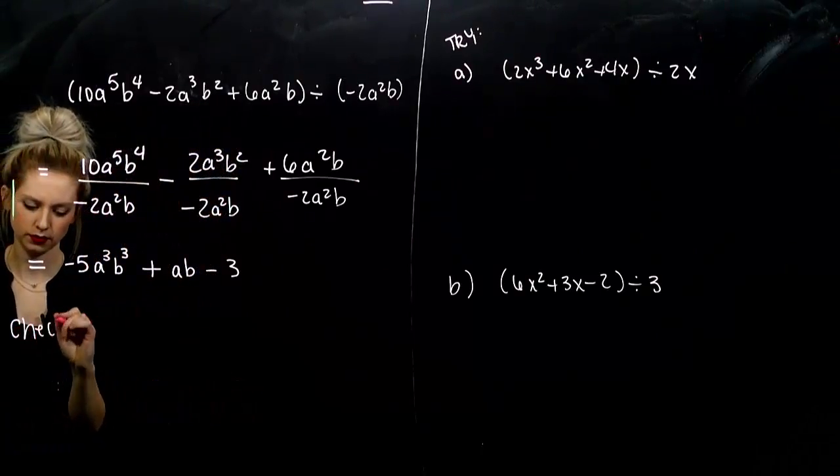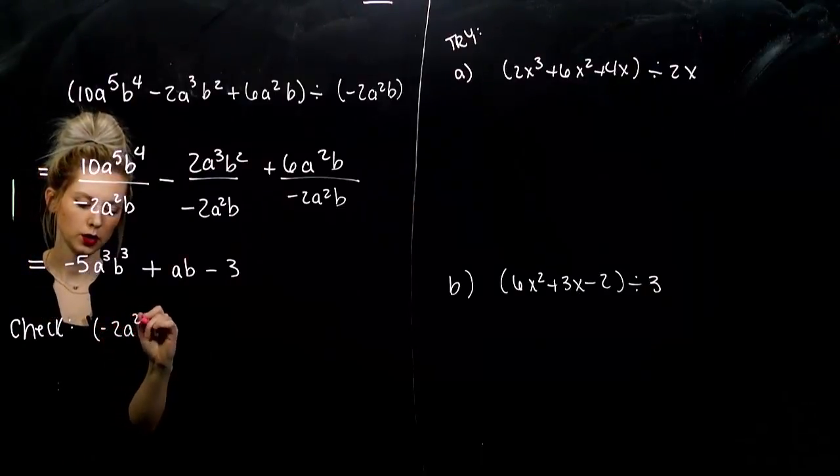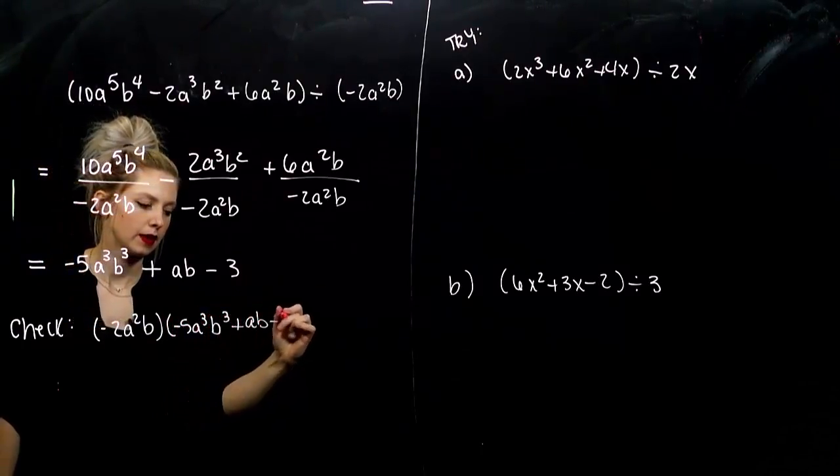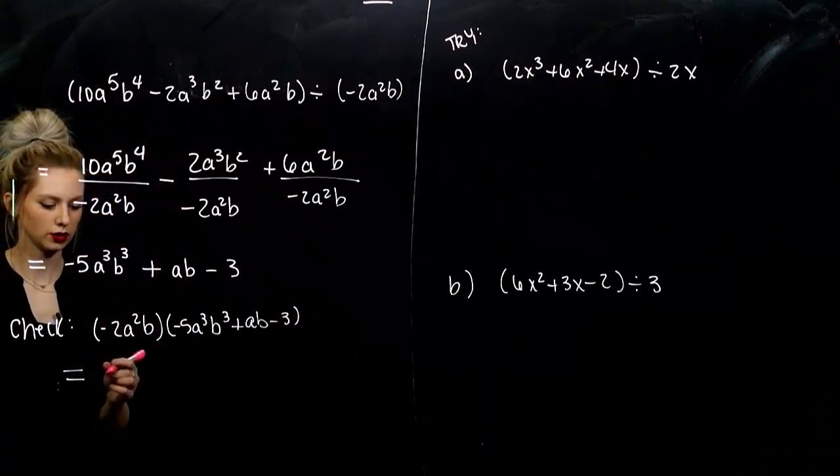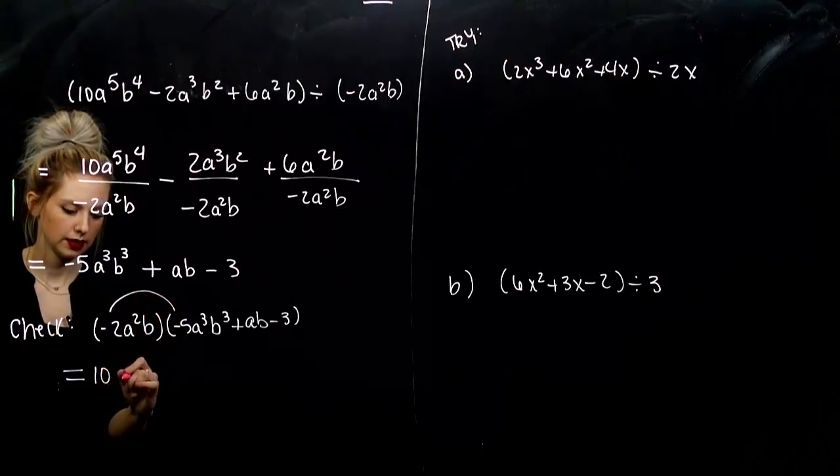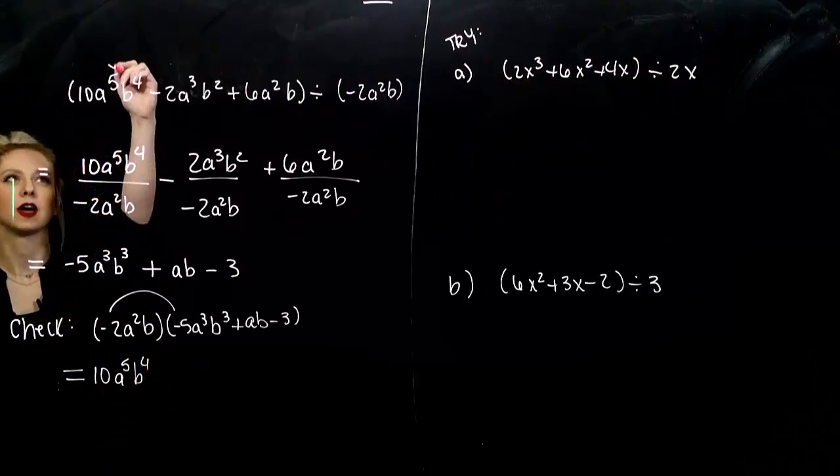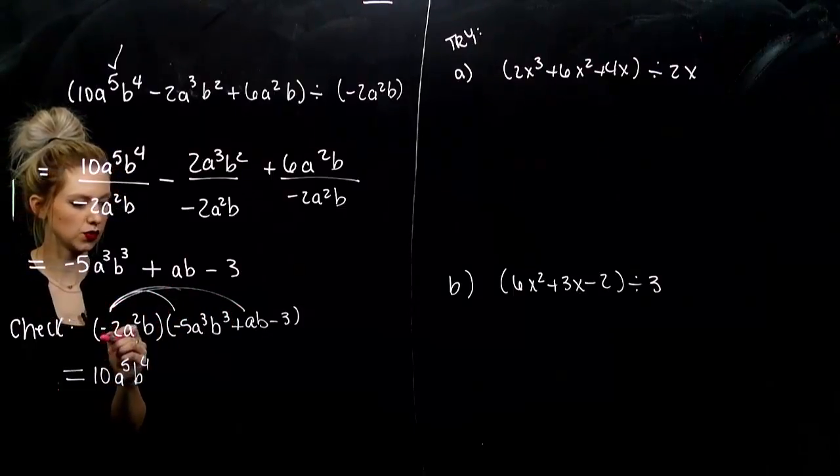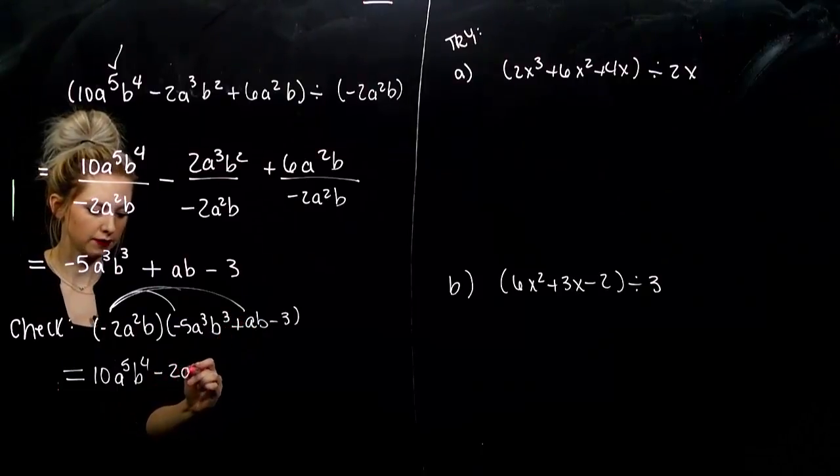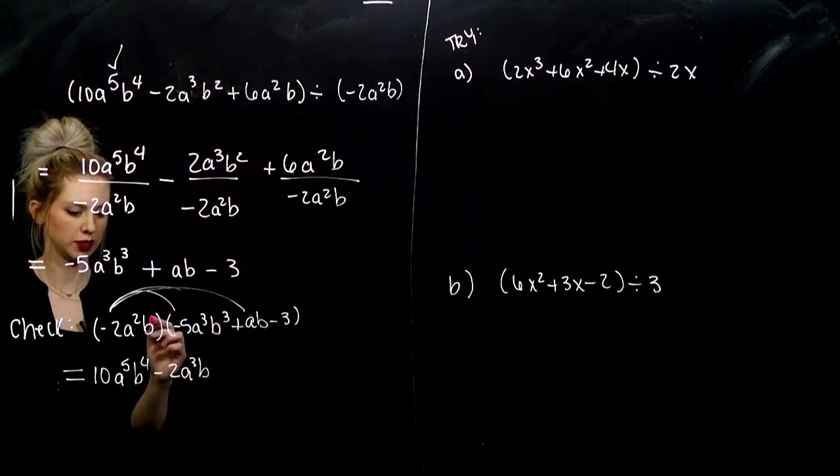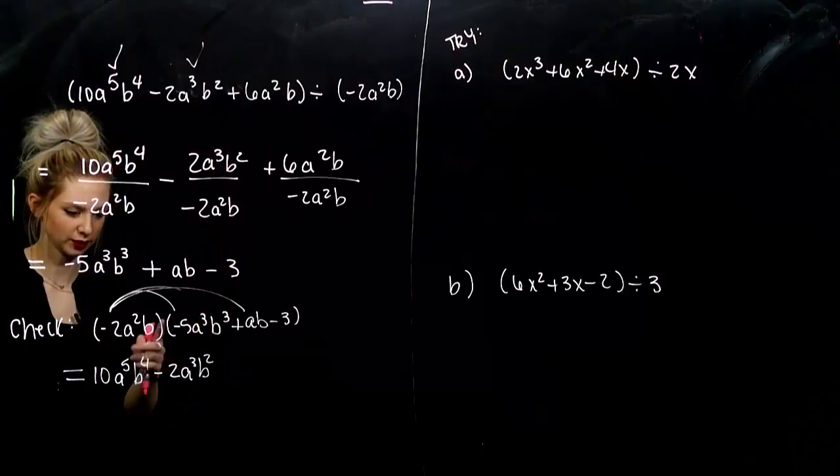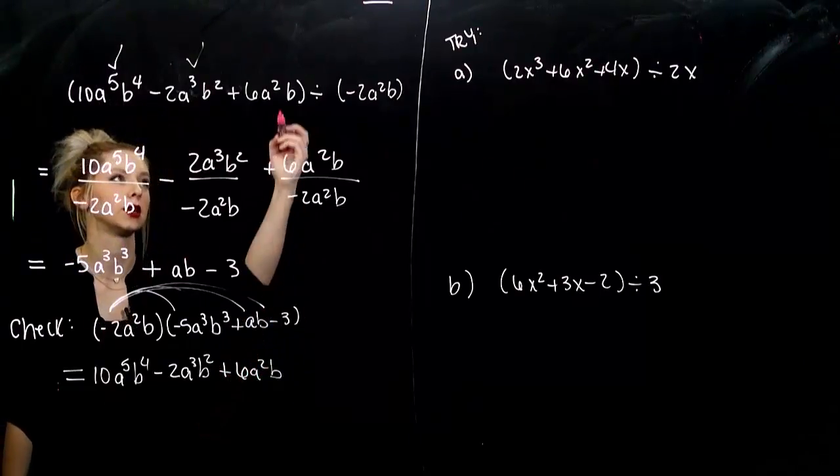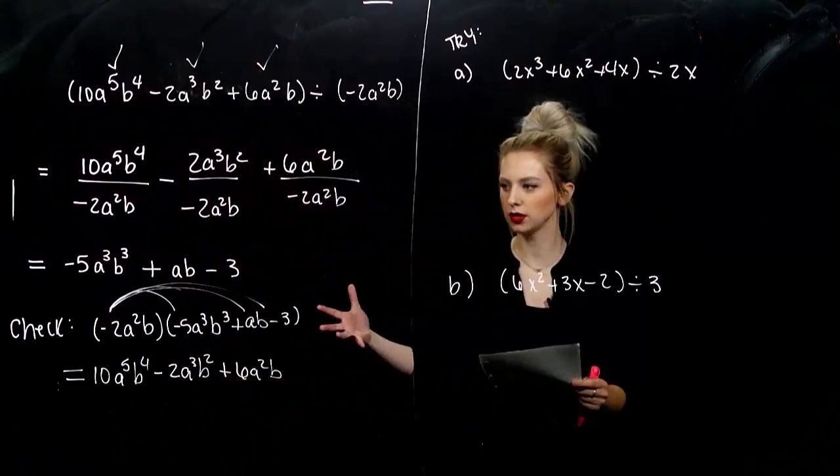So, how can we check? Make sure we have it correct. Take our monomial, what we divided by, times what we think it's equivalent to. And in the end, is it really going to be equal to what we started with? So, let's see. Negative 2 times negative 5, positive 10. a to the 5th, b to the 4th. I've got the first term. To the second one. A little bit farther. Second one. Negative 2 times 1 is going to be negative 2. I've got 3 a's, 1b. Excuse me. 2b's squared. Double check. We got there. Good. And to the last term. Negative times a negative. We'll give us positive 6a²b. Got there.